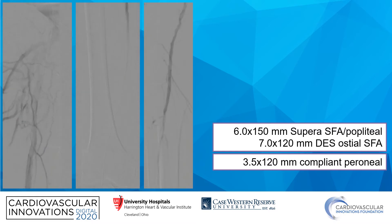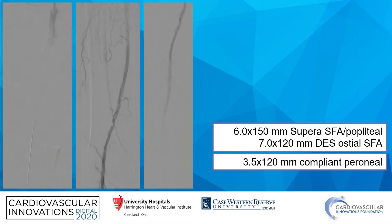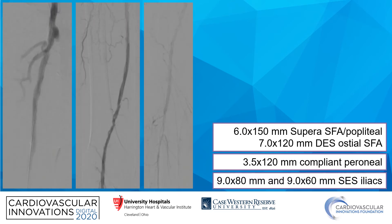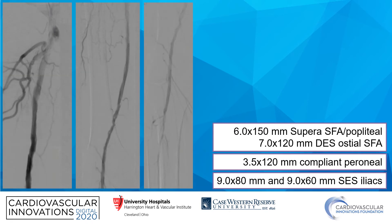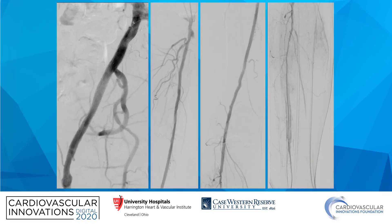We performed angioplasty of the peroneal artery. Concomitantly, we were able to remove the retrograde sheath with angioplasty for hemostasis. We then performed two self-expanding stents into the iliac arteries — into the external and common iliac arteries. Here are our completion angiograms. As you can see, the iliacs are widely patent. The ostium of the SFA is covered with some mild protrusion into the common femoral artery to secure the inflow. The popliteal distal SFA Supera stent is nicely expanded and we have good runoff into the peroneal artery.